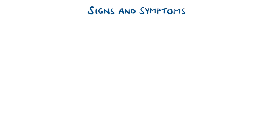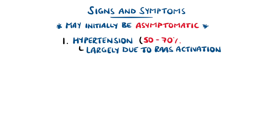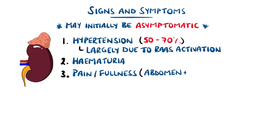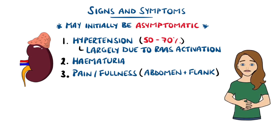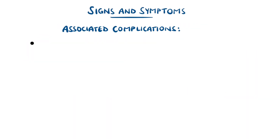Initially, polycystic kidney disease may be asymptomatic, but with time, hypertension can develop due to the renin-angiotensin-aldosterone system activation. Haematuria can be present due to vessel damage within the cysts, as well as pain or fullness, most commonly in the abdomen. Polyuria, meaning an excessive urine output, can be a feature because the cysts can make it more difficult to concentrate the urine. There is an increased risk of urinary tract infections and renal stones.